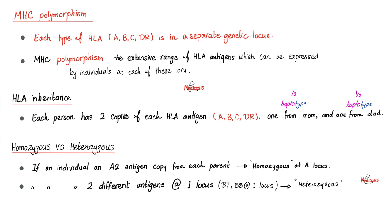Each type of HLA is in a separate genetic locus on your chromosome. MHC polymorphism refers to the extensive range of HLA antigens — there can be a wide or narrow range of genetic loci and the antigens on them. In other words, different people are different. Each person has two copies of each HLA antigen — one from mom, one from dad — so you can be homozygous or heterozygous.